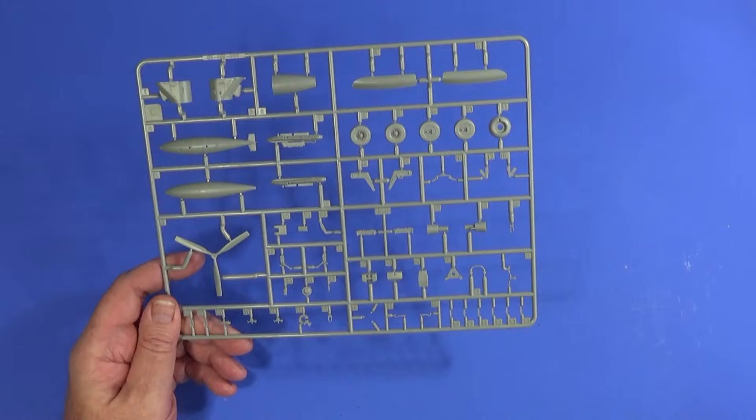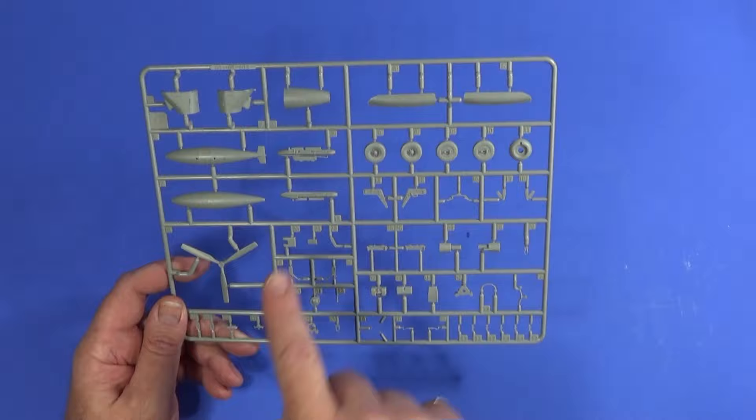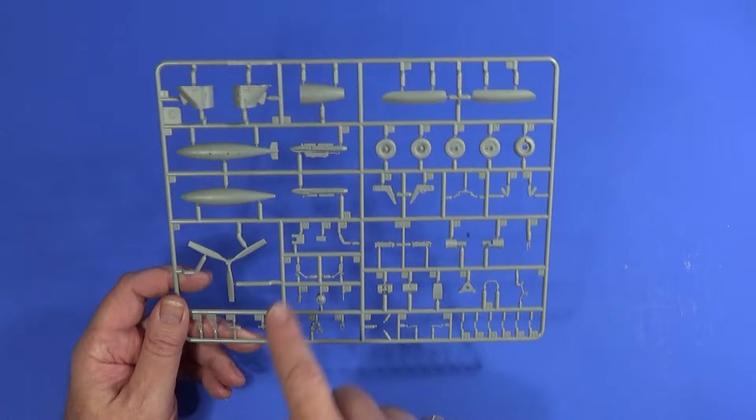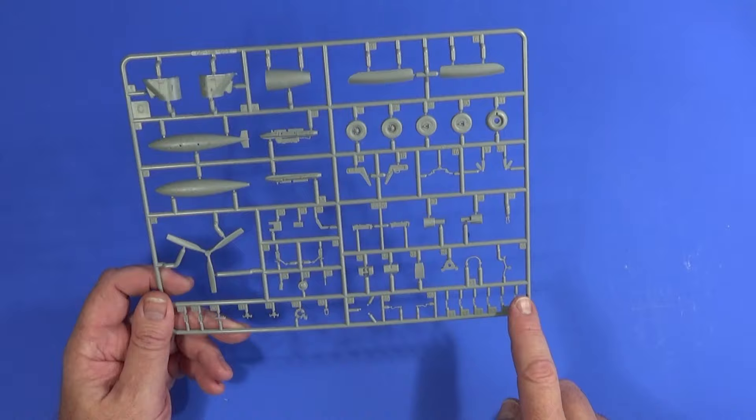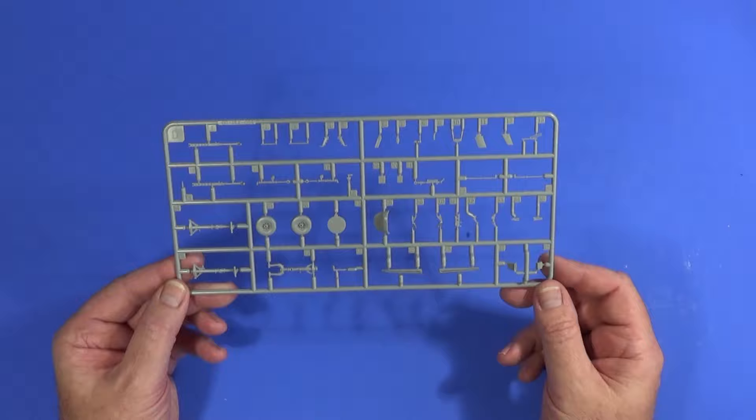This is frame C and you get two of them because essentially these are all the bits that are duplicated. So we have the underwing triple ejector racks, gear, the wheels, parts of the engine. Parts of the bomb rack system here as well. So basically everything that gets duplicated, ejection seat parts here as well, interestingly.